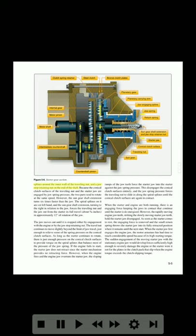A return spring is installed on the sun gear shaft extension between the splines around the inner wall of the traveling nut and a jaw stop retaining nut on the end of the shaft. Because the conical clutch surfaces of the traveling nut and the starter jaw are engaged by jaw spring pressure, the two parts tend to rotate at the same speed. However, the sun gear shaft extension turns six times faster than the jaw. The spiral splines on it are cut left-hand, and the sun gear shaft extension turning to the right in relation to the jaw forces the traveling nut and jaw out from the starter its full travel — about 5/16 inches in approximately 12 degrees of rotation of the jaw. The jaw moves out until it is stopped either by engagement with the engine or by the jaw stop retaining nut.